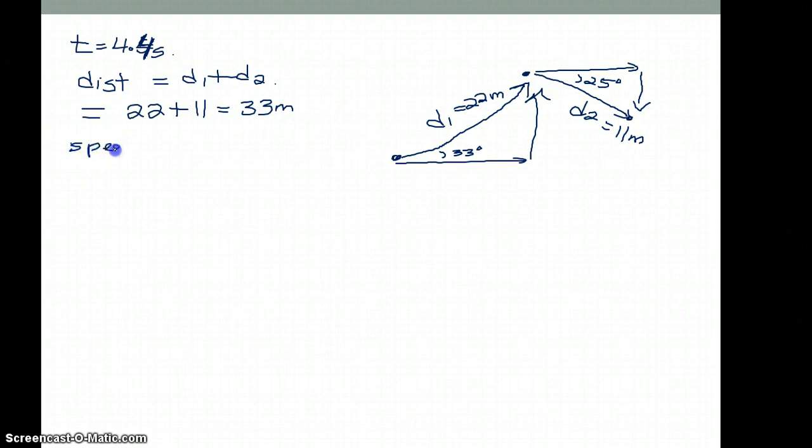So d1 plus d2 is going to be 22 plus 11, which gives me 33 meters. And of course your speed is going to be 33 meters divided by 4.4 seconds. This is not something that we usually do much of in grade 12 physics. Now the second part, which is the most important part, is your vector components.